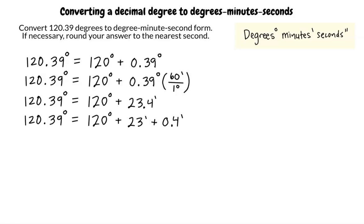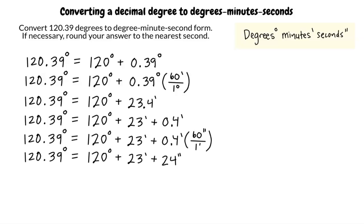Last, we convert 0.4 minutes to seconds. Do you know how we can do this? Do we multiply 0.4 by 60, since there are 60 seconds in 1 minute? That is correct. Doing this, we get 120 degrees plus 23 minutes plus 24 seconds.